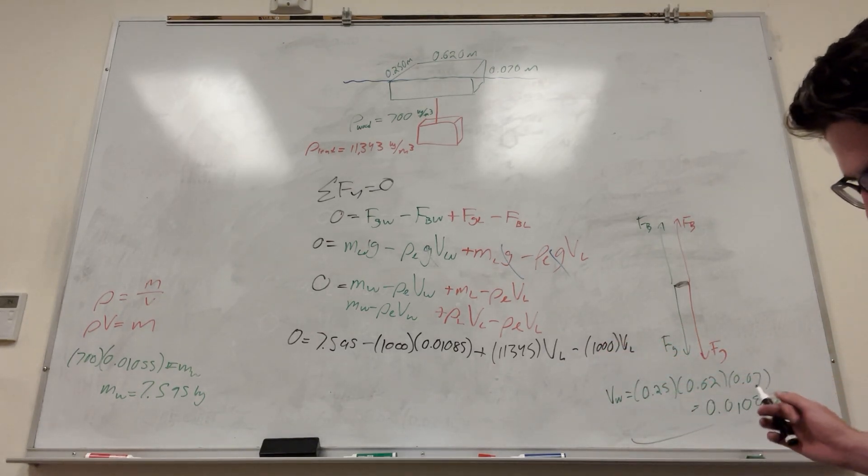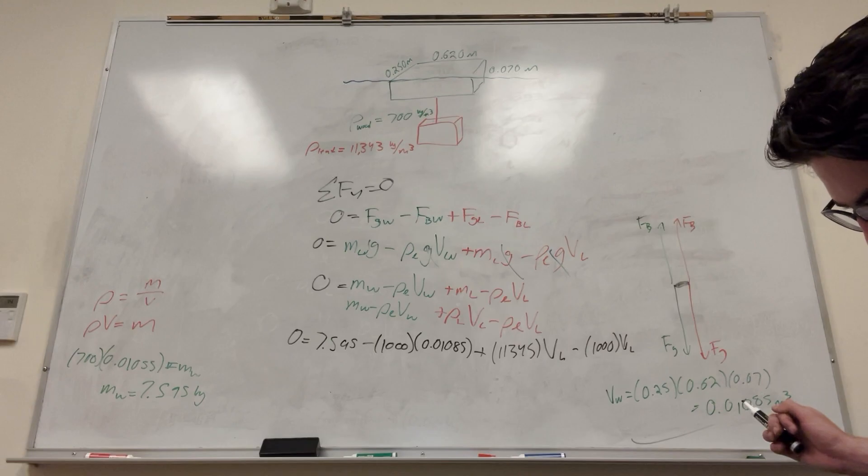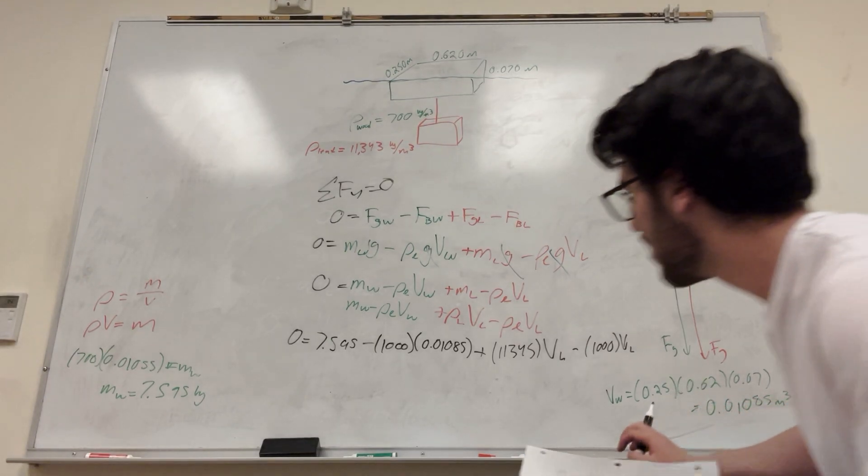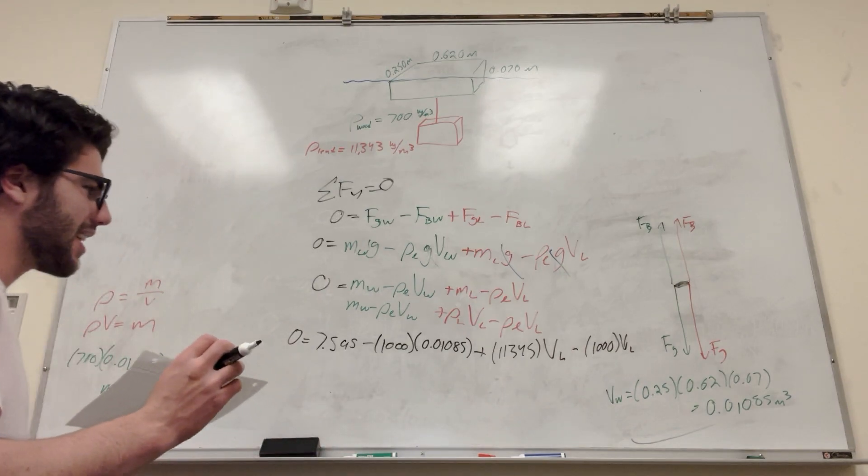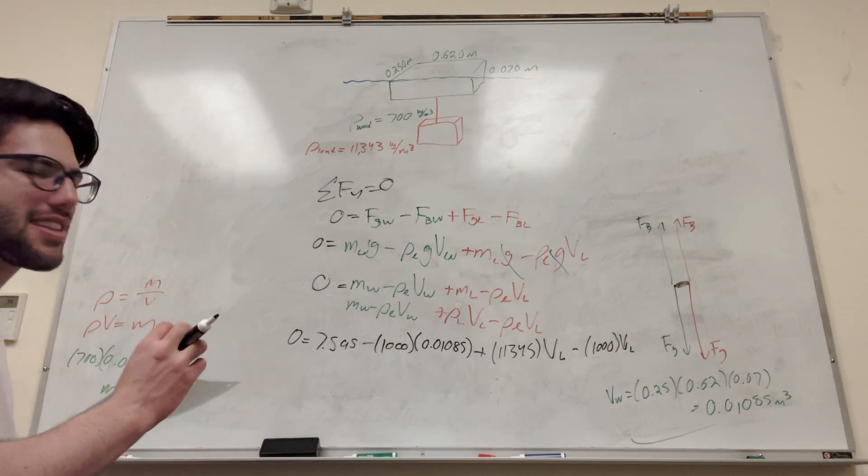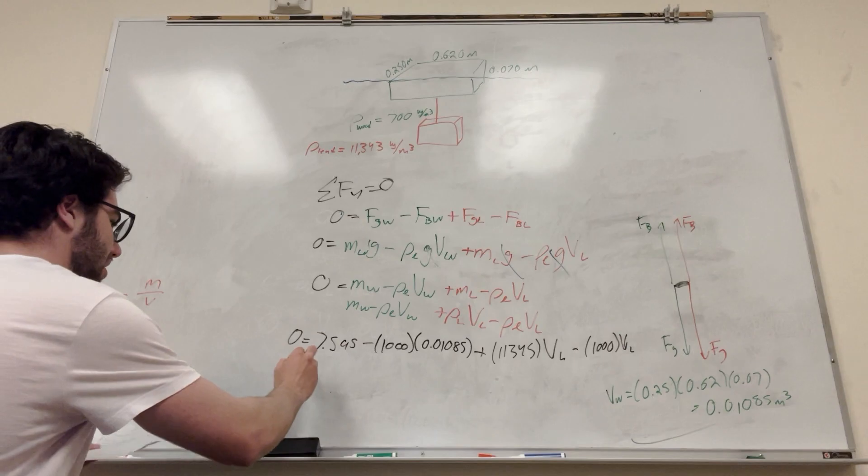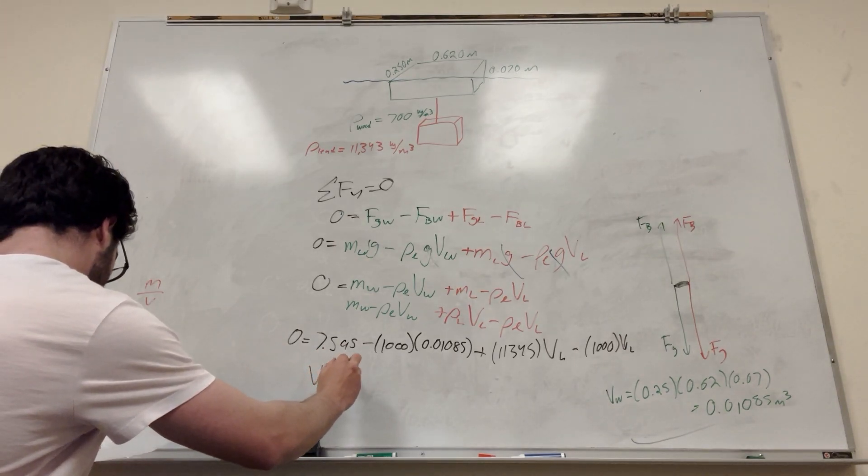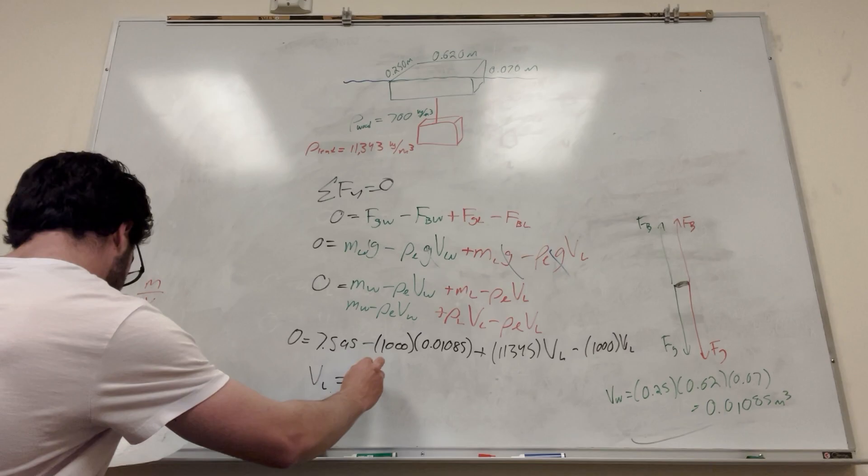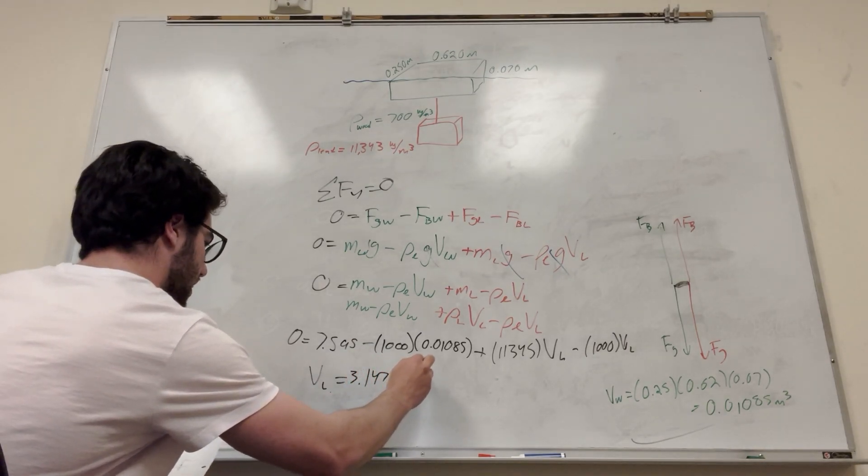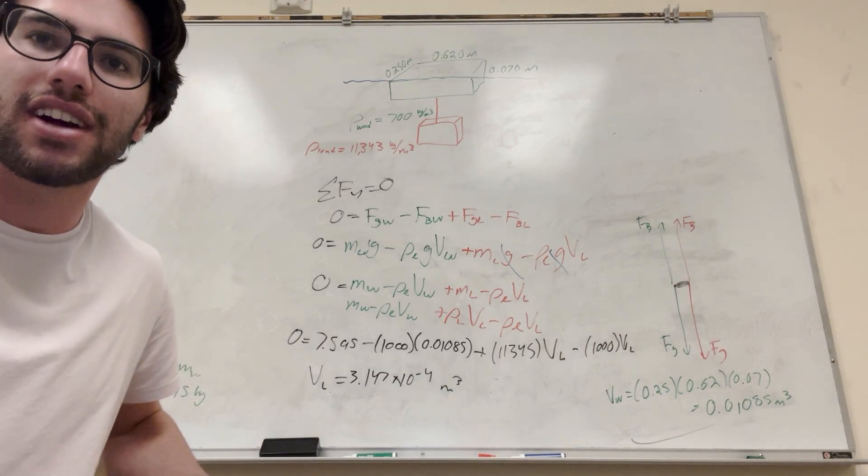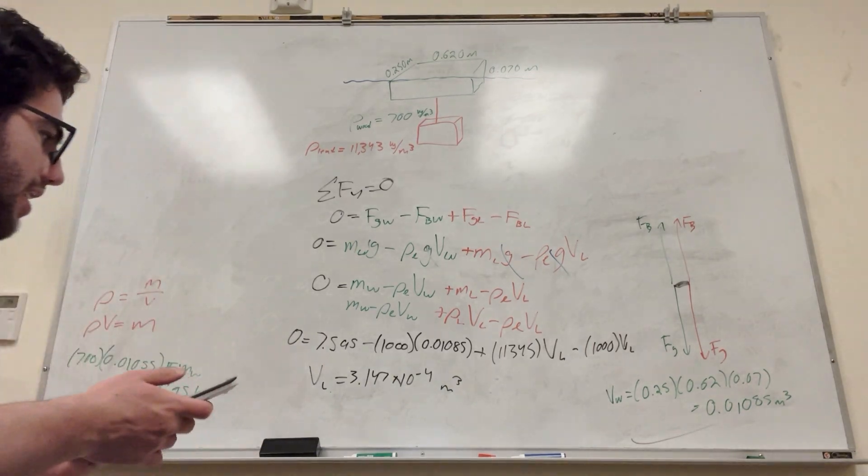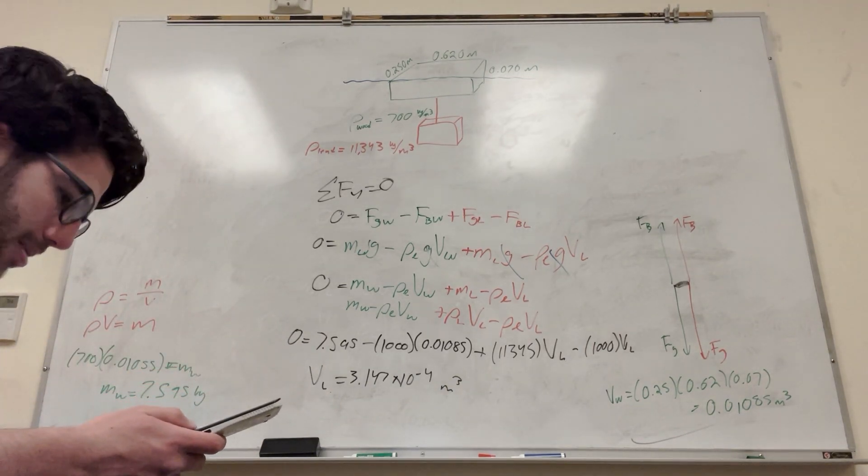So basically from here we just have this one unknown, right? We can solve for volume of the lead. To do that, I mean, I don't know, like, do I have to tell you guys how to solve this? I didn't really write up these exact instructions, and I don't have the time to do that in my head. So if you do that, you're going to get 3.147 times 10 to the negative 4 meters cubed. I'm going to plug this into my calculator and make sure that's right, because I just made a mistake earlier, and it cost me a lot of time. And yeah, that's the number I get. Let's go. Let's go.